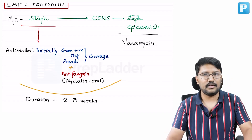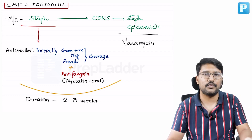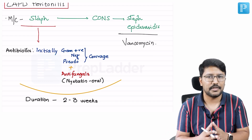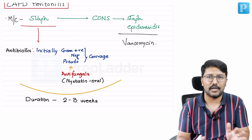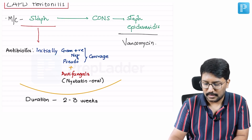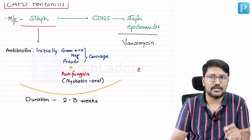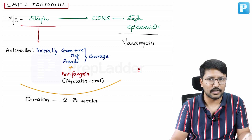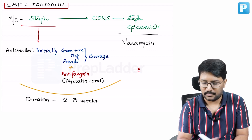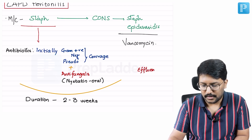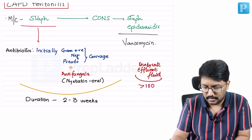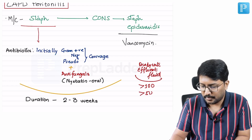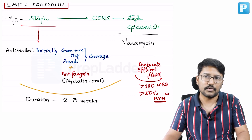Patients present with cloudy dialysate effluent, mild abdominal pain, and fever. All CAPD patients are instructed to watch for cloudiness in the effluent. Diagnosis is based on dialysate effluent fluid analysis — not peritoneal puncture. If there are more than 100 WBCs per mL and more than 50% are polymorphonuclear cells (neutrophils), that satisfies the diagnostic criteria for CAPD peritonitis.